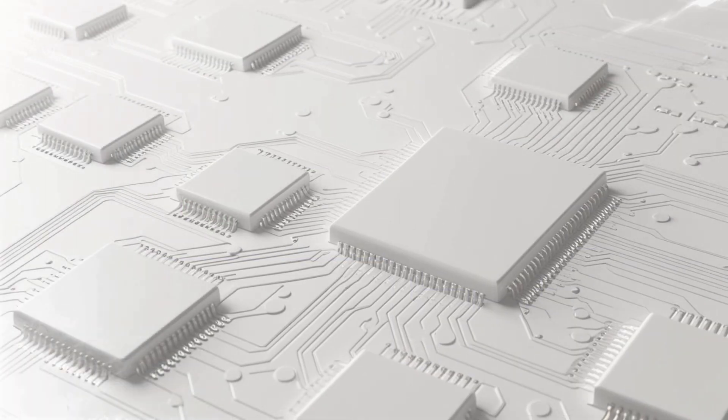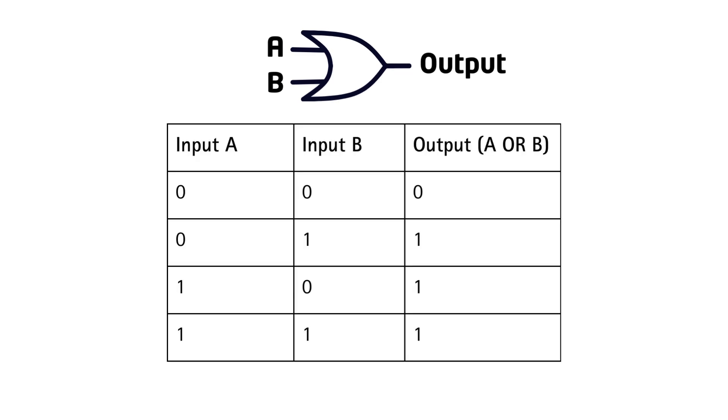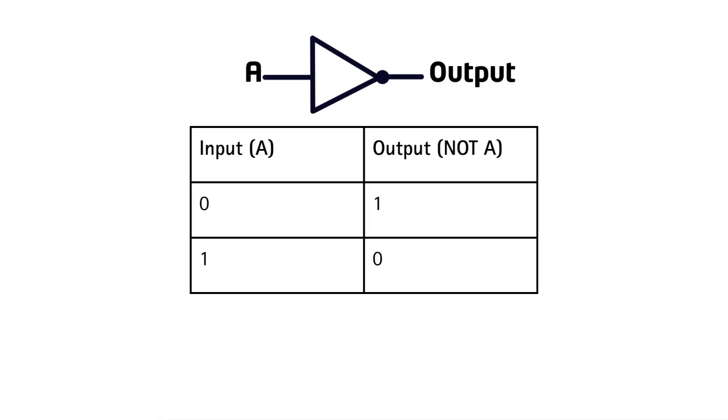Before we build a register, let's quickly go over the logic gates we need. First, we have an OR gate. The OR gate follows a simple rule: it outputs 1 if at least one of its inputs is 1, otherwise it outputs 0. Next, we have a NOT gate, which inverts the input. 1 becomes 0, and 0 becomes 1.